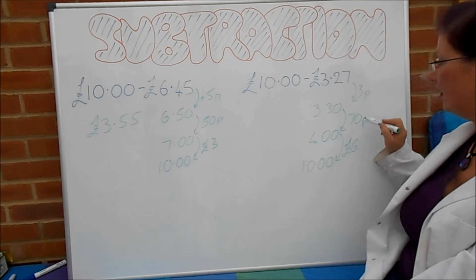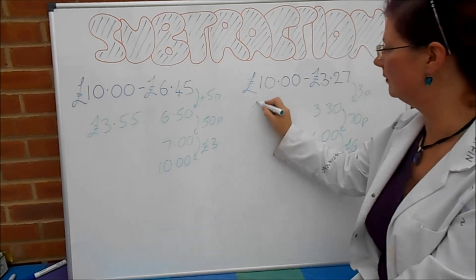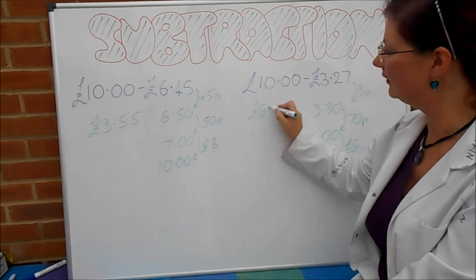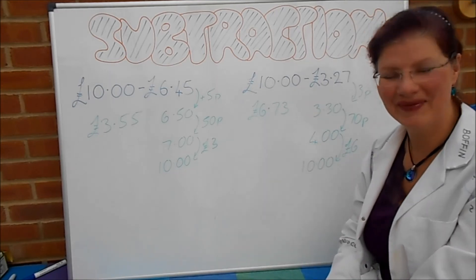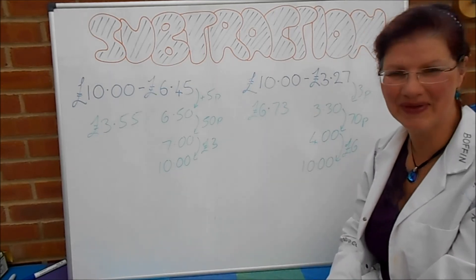So that all in all is £6 plus 70 plus 3. £6.73. There, I hope you got on with that alright. See you next time, Batty fans.